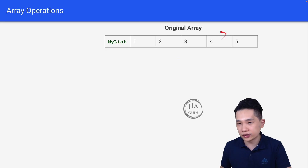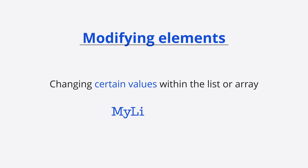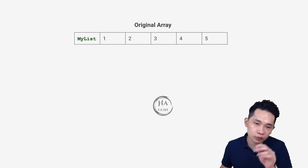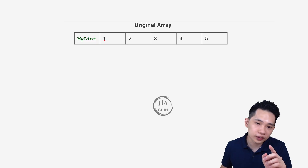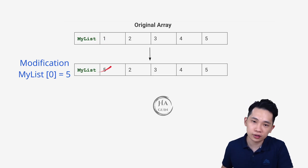Now let's look at some array operations. The first operation will be modifying elements, which means changing a certain value inside the list or array. You can just do something like this: my_list[0] = 5. The value inside my_list[0] is currently 1, so right now we are updating that 1 into 5. Looking at the result, the first element has been updated to 5.